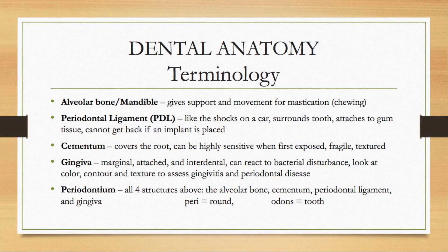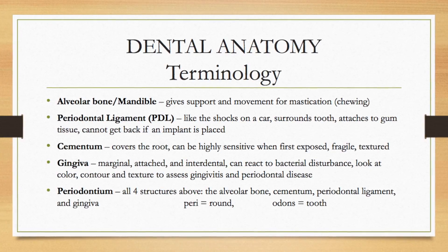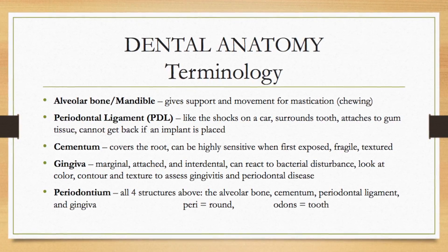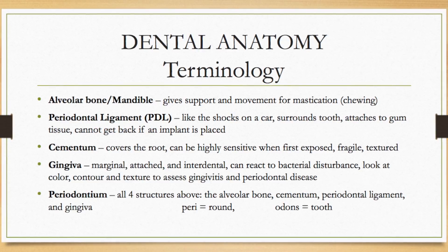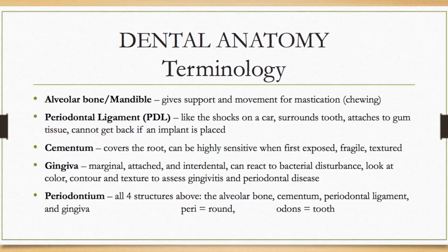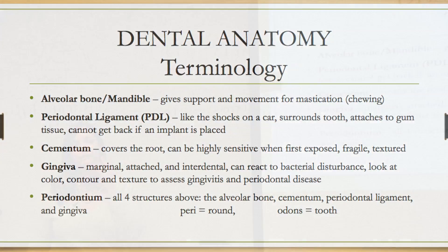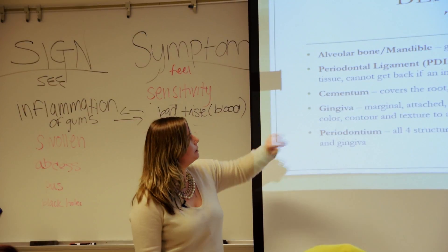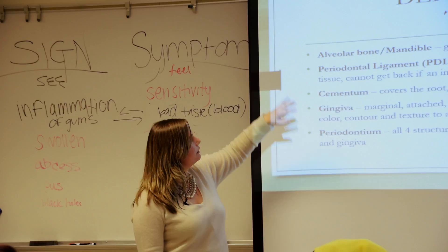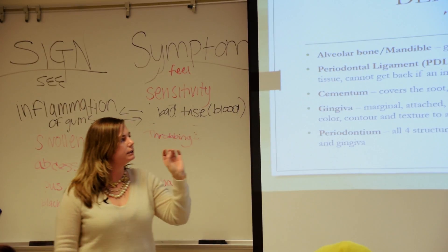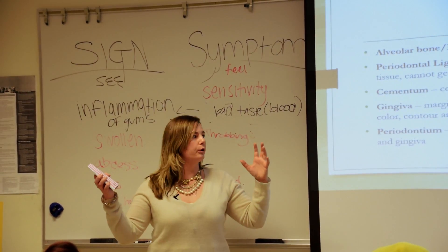The periodontium is four structures: the bone, the PDL or periodontal ligament, the cementum, and the gingiva. The root of the tooth is covered by cementum. It's highly sensitive when exposed because of recession — sometimes people complaining of sweet sensitivity may have exposed cementum. Surrounding that is a periodontal ligament, which attaches the tooth to the gingiva, and it's all supported in the bone.